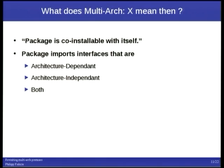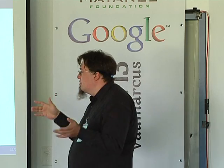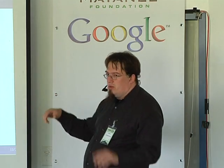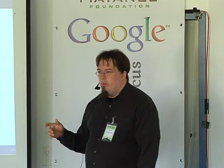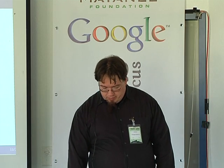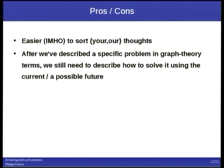So what does our multi-arch field actually mean then? First, as I said, the package is co-installable with itself. Then from a graph theory point of view we say: this package exports interfaces that are architecture-dependent, architecture-independent, or both. A package can say — using just the current code system — all incoming edges (reverse dependencies) have to be from the same architecture, or from any architecture, or we can have one or the other.